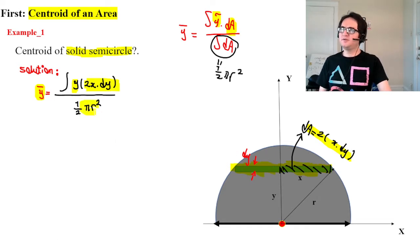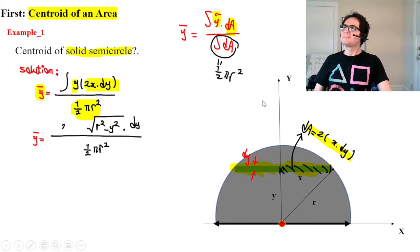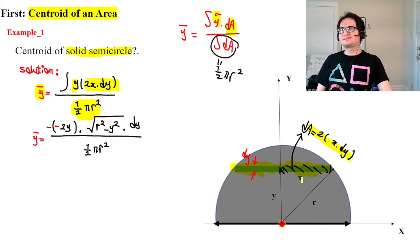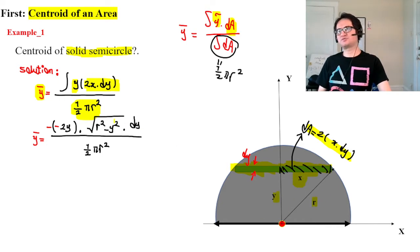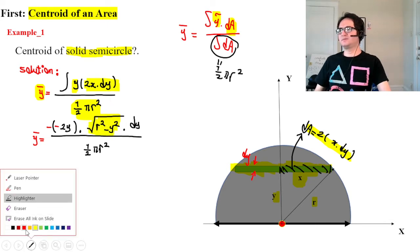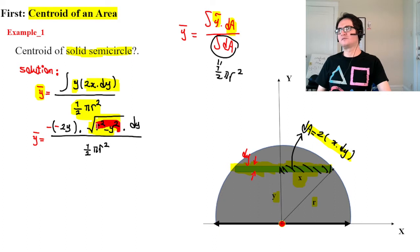We divide by the area of a half circle. We replace x using the geometric relation with r and y, so x equals the square root of r squared minus y squared.